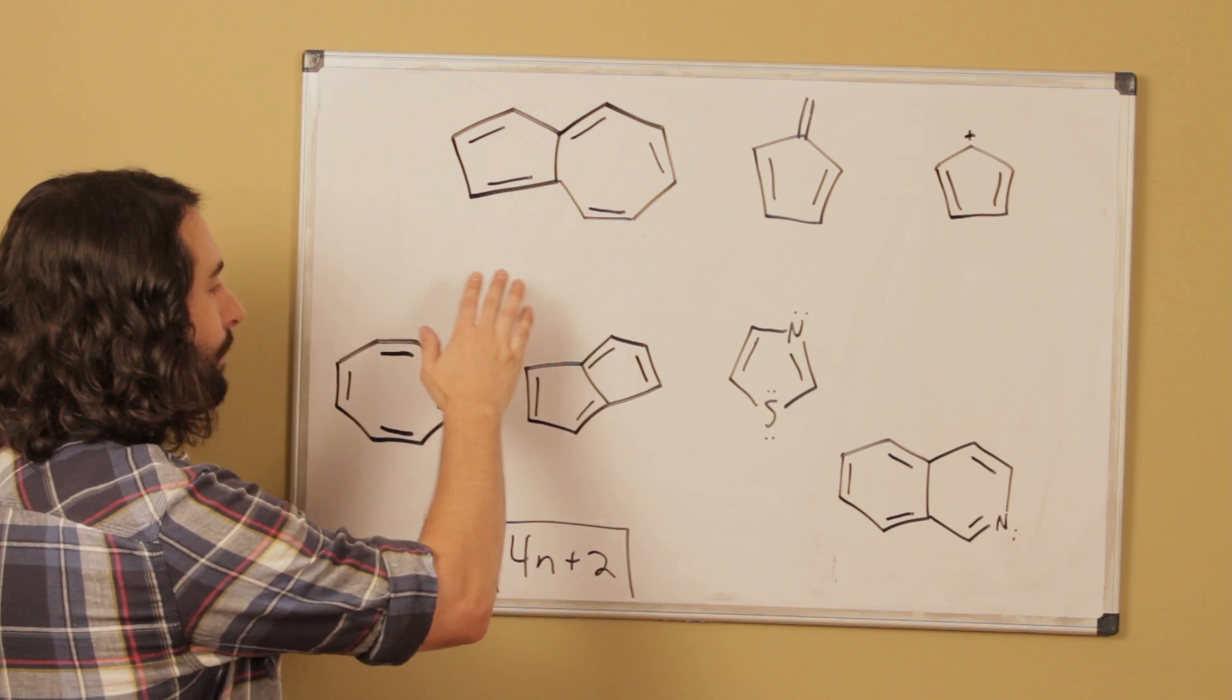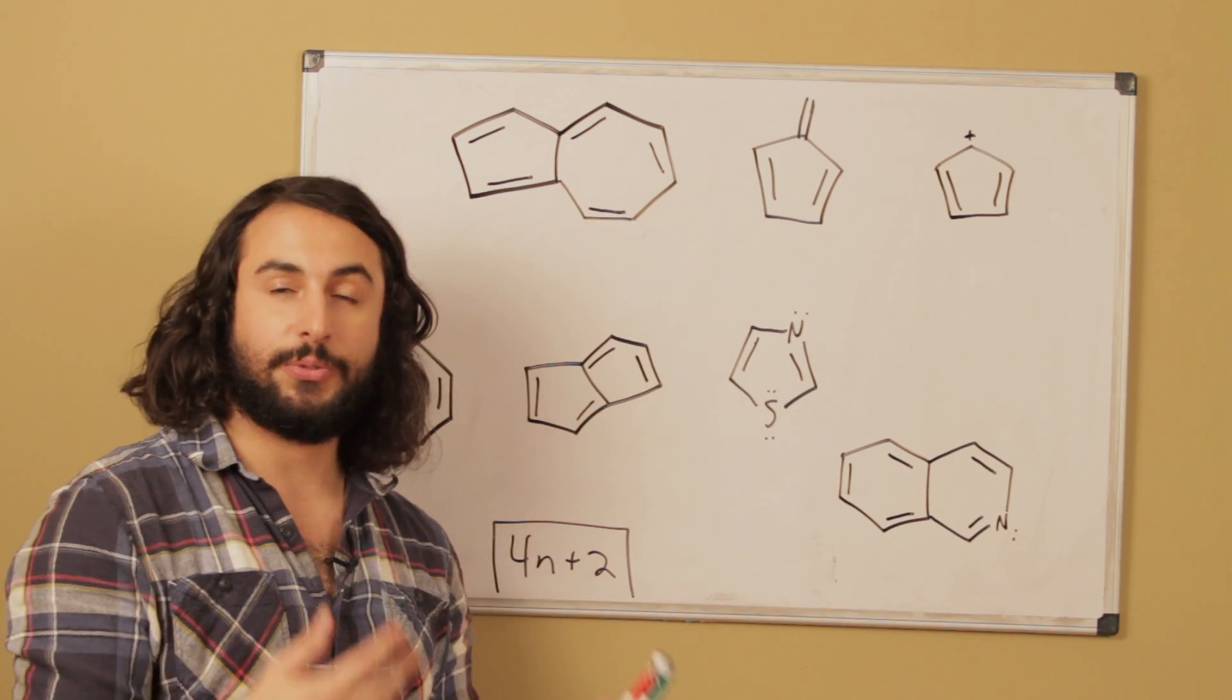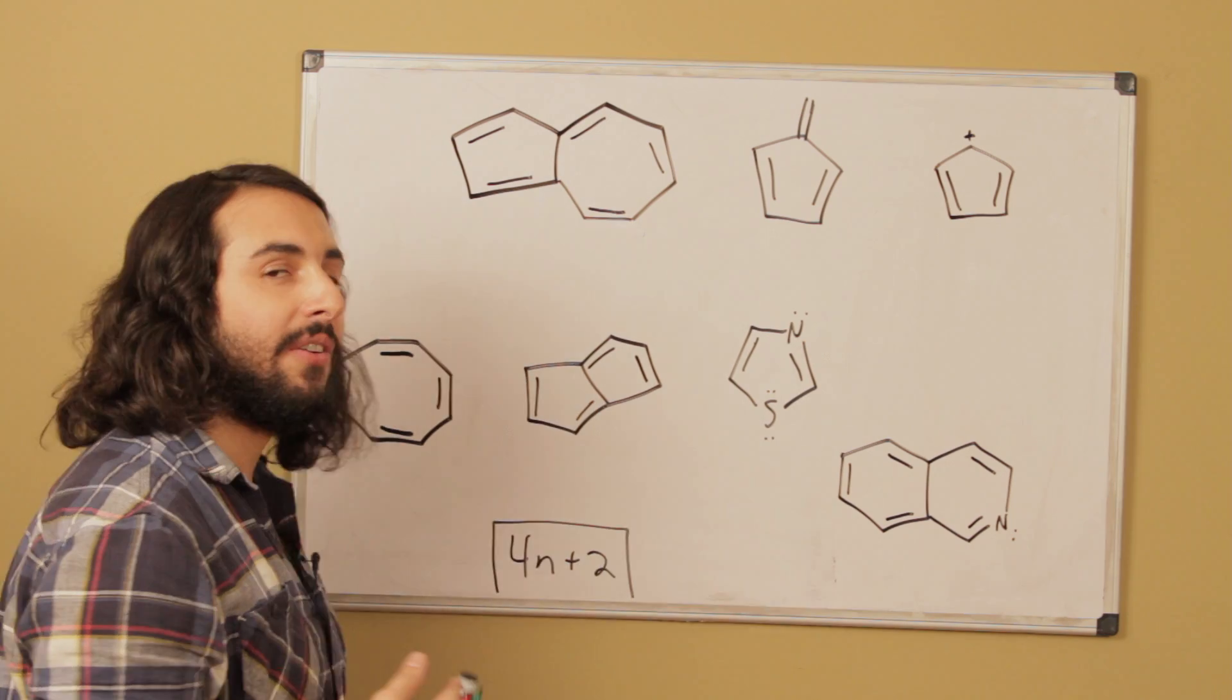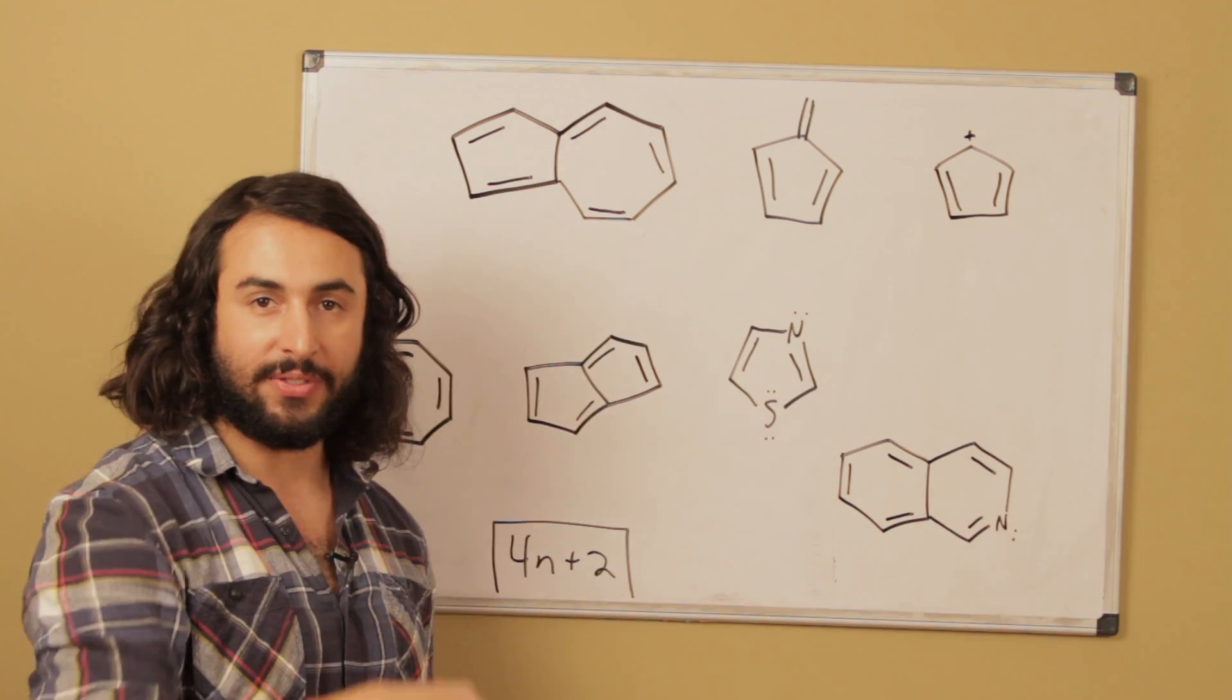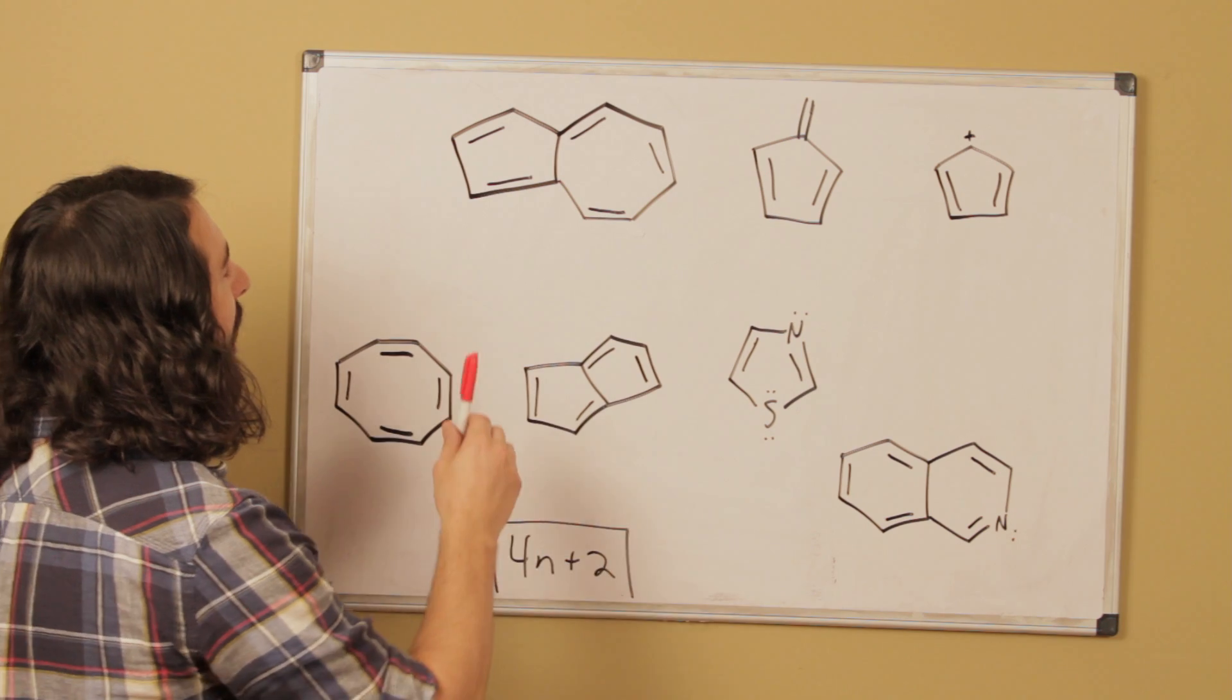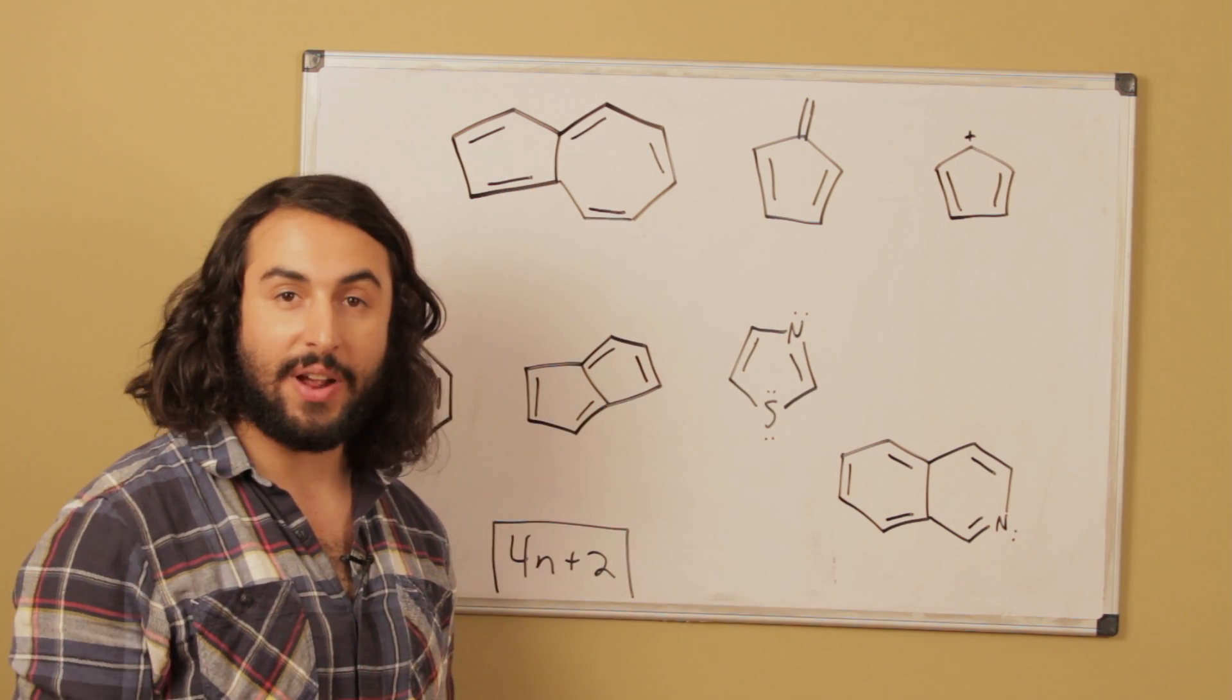So let's look at all of these. Now this is completely planar and this is fully conjugated meaning we can draw resonance structures that push these pi bonds all around the ring. So there is delocalized pi electron density all along the perimeter of that molecule. So those two criteria are satisfied.